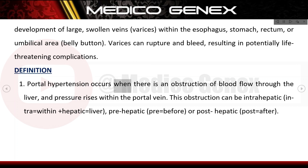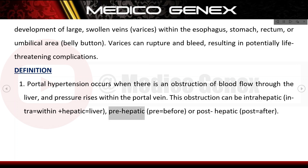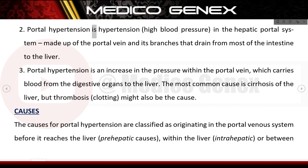Varices can rupture and bleed, resulting in potentially life-threatening complications. Portal hypertension occurs when there is an obstruction of blood flow through the liver and pressure rises within the portal vein. This obstruction can be intra-hepatic (within the liver), pre-hepatic (before the liver), or post-hepatic (after the liver).